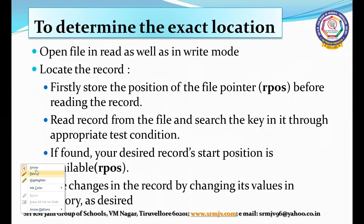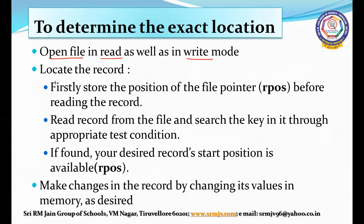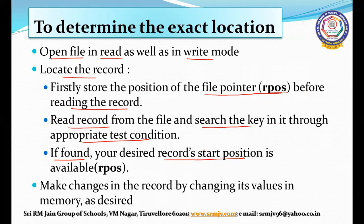To determine the exact location of the record, first we have to open the file in both read and write mode. To locate the record, we have to store the position of the file pointer — let us assume it as R-position — before reading the record. After storing the position, we read the record from the file and search the key through the appropriate test condition. If it matches, your desired record's start position is available.